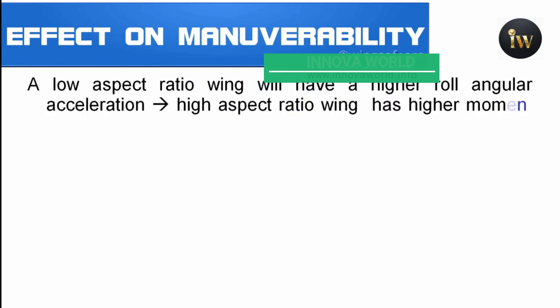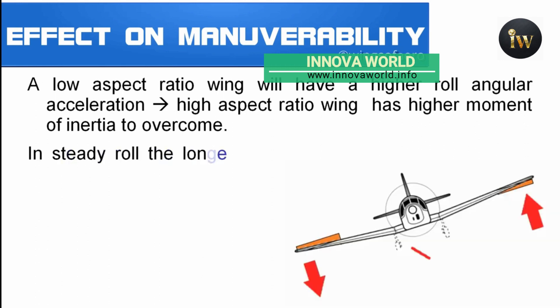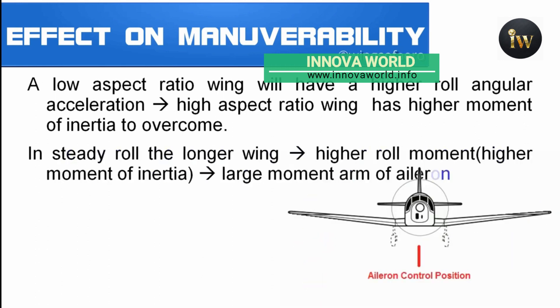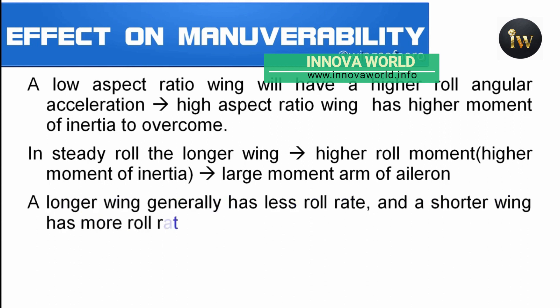Regarding the effect on maneuverability, a low aspect ratio wing will have a higher roll angular acceleration than one with a high aspect ratio, because a high aspect ratio wing has a higher moment of inertia to overcome in steady roll. The longer wing will give a higher roll rate because of the higher moment arm of the aileron.